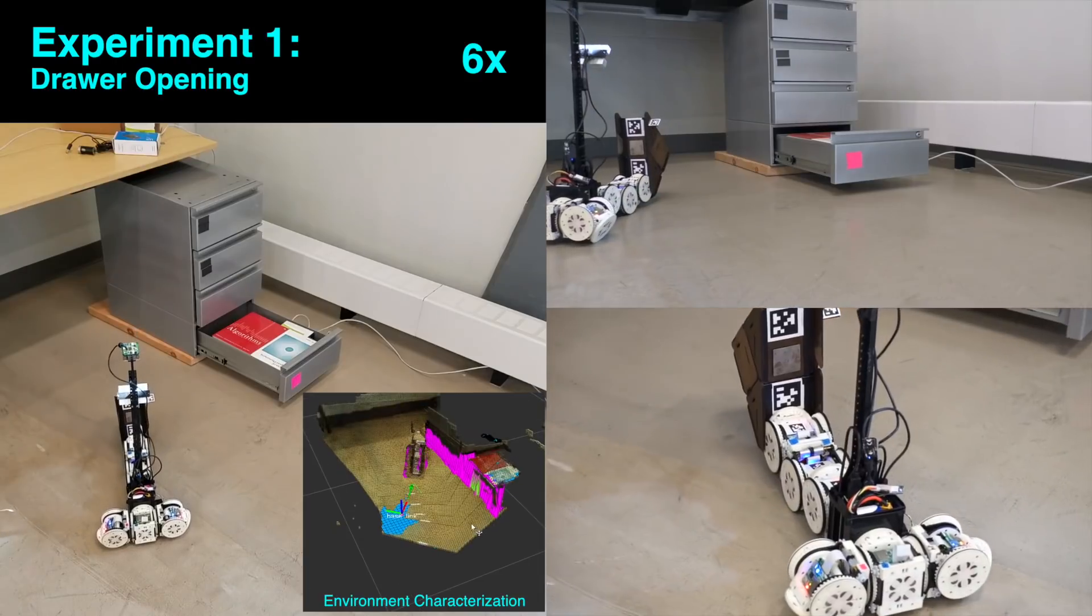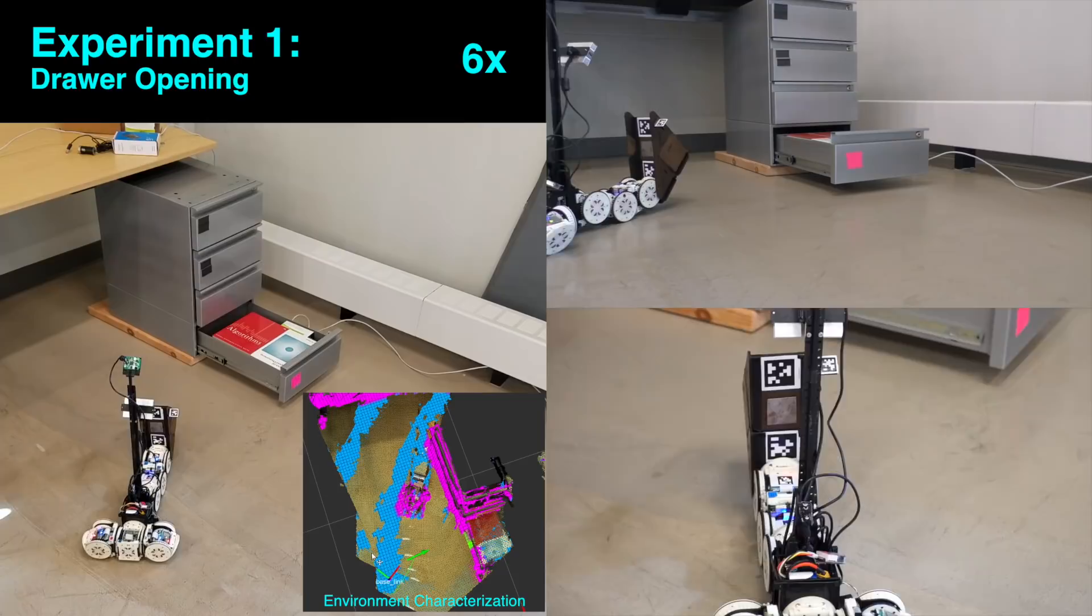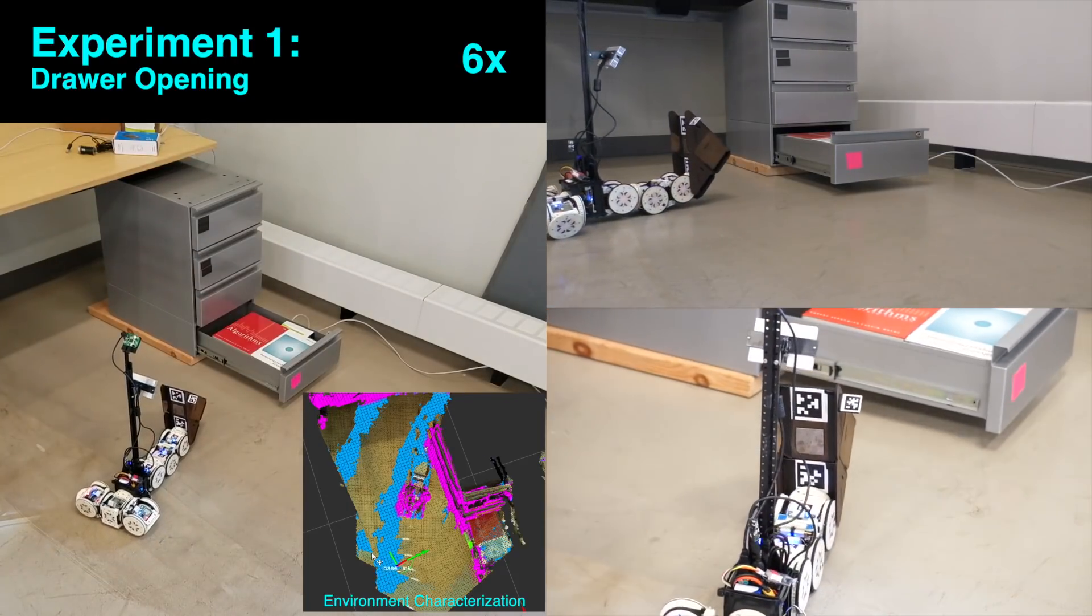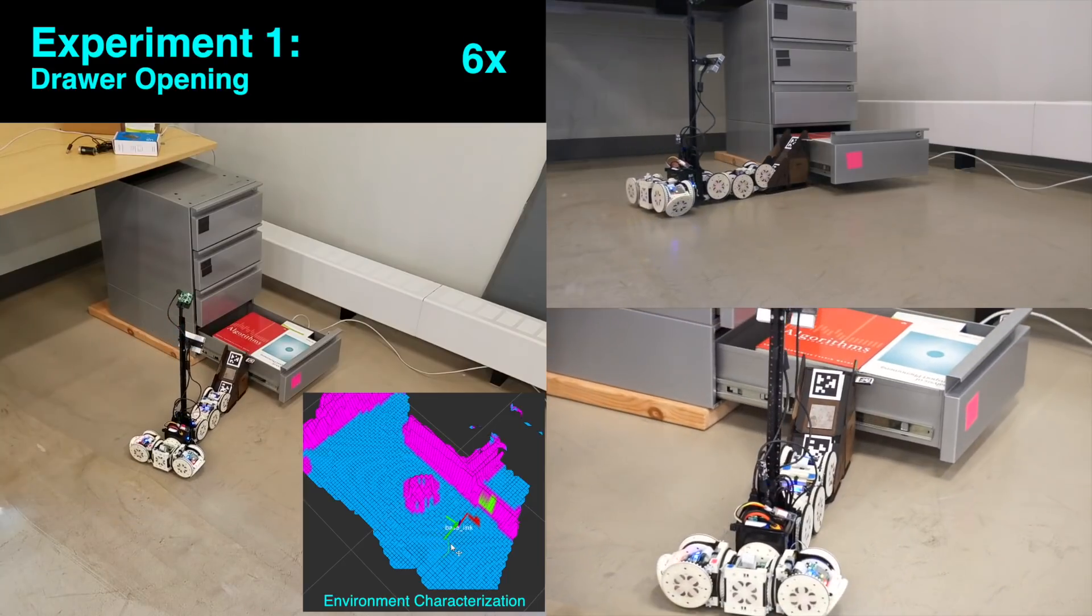It backs up to take another look at the ledge, confirming an appropriate placement location for the ramp. It then places the ramp next to the drawer, augmenting this previously problematic environment to make it possible to complete its task.